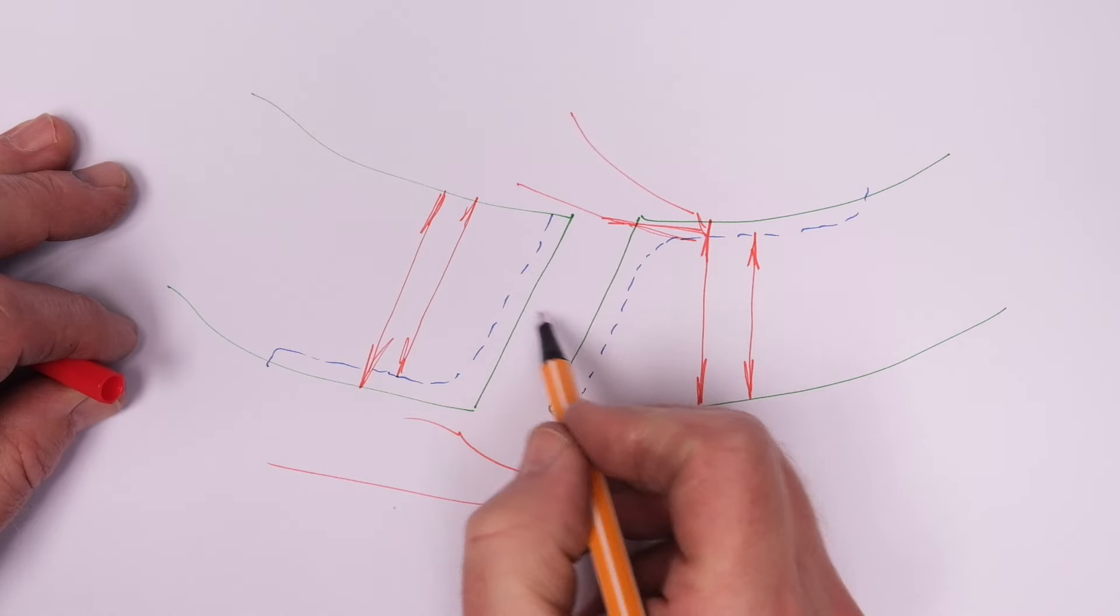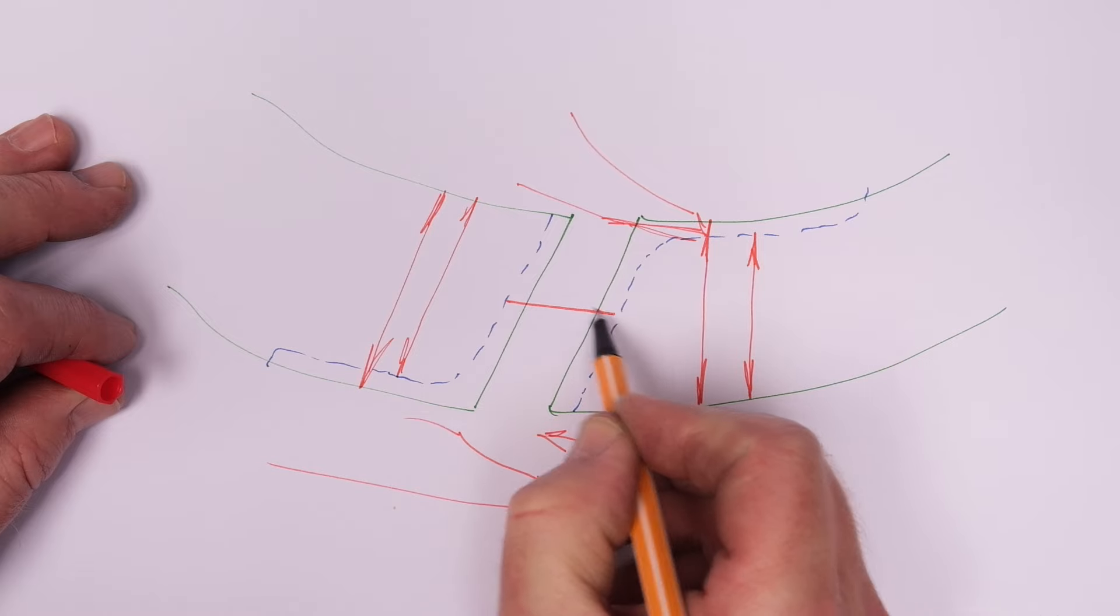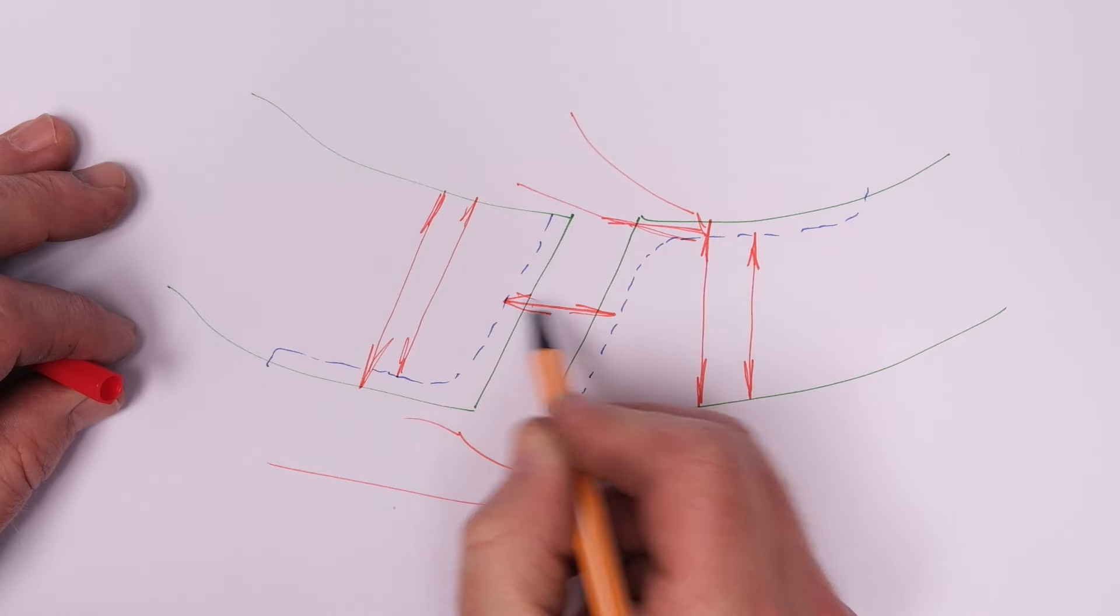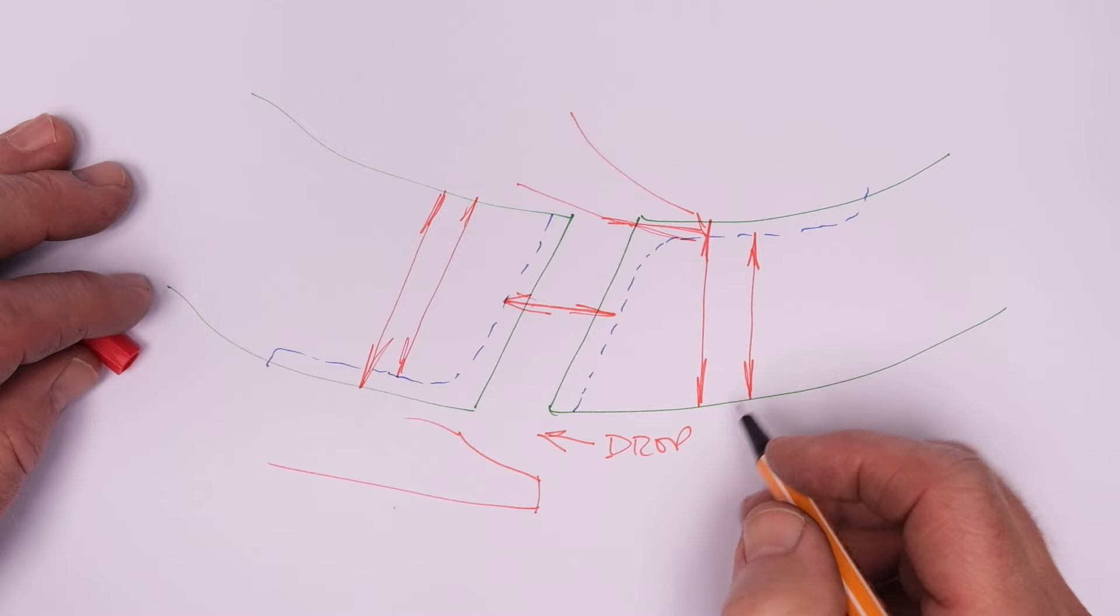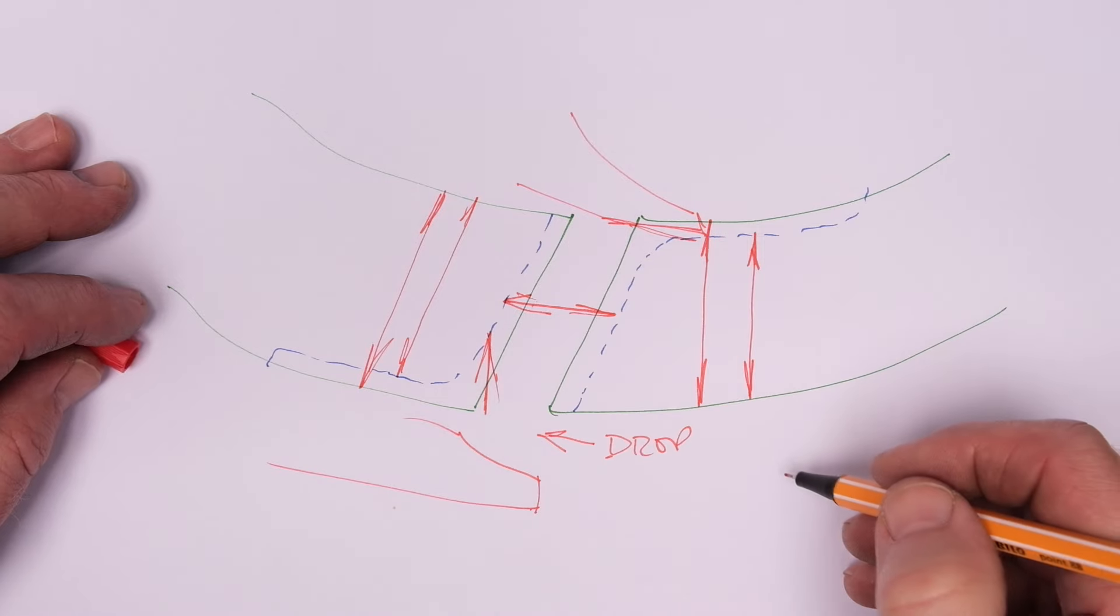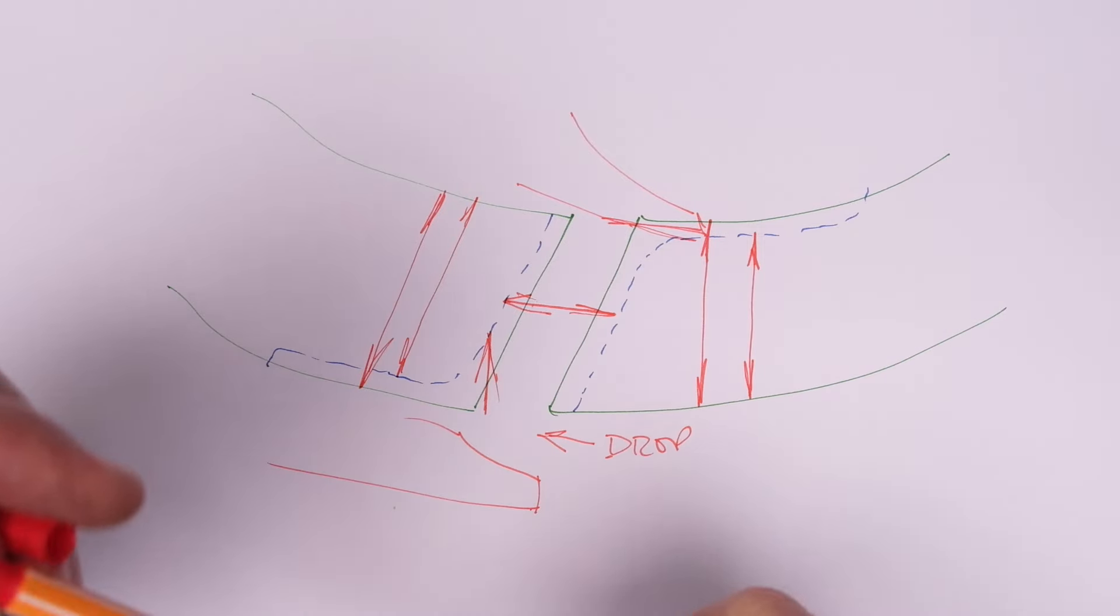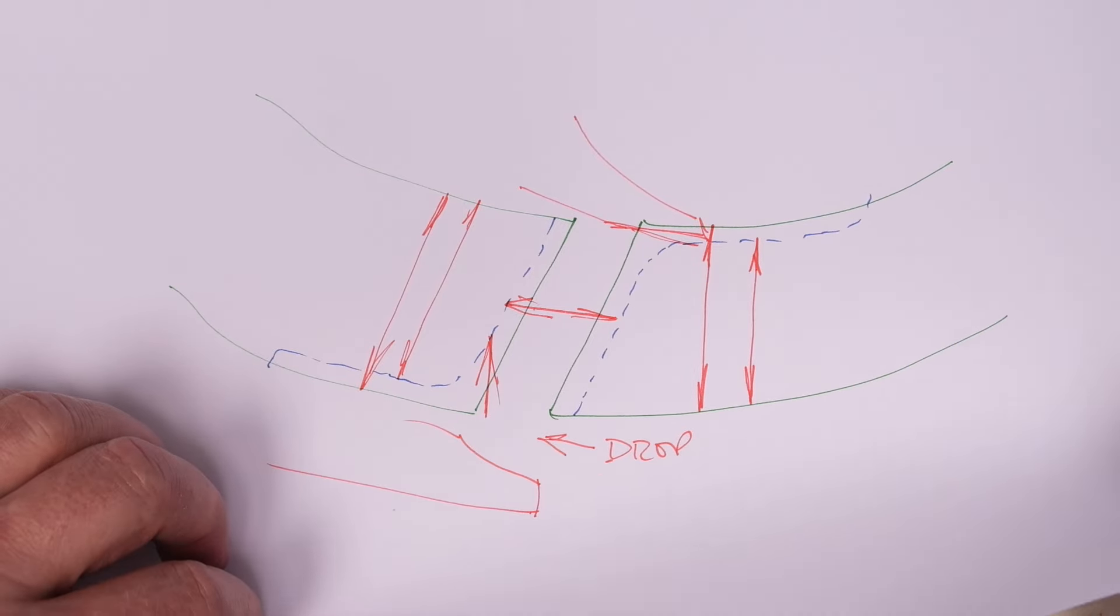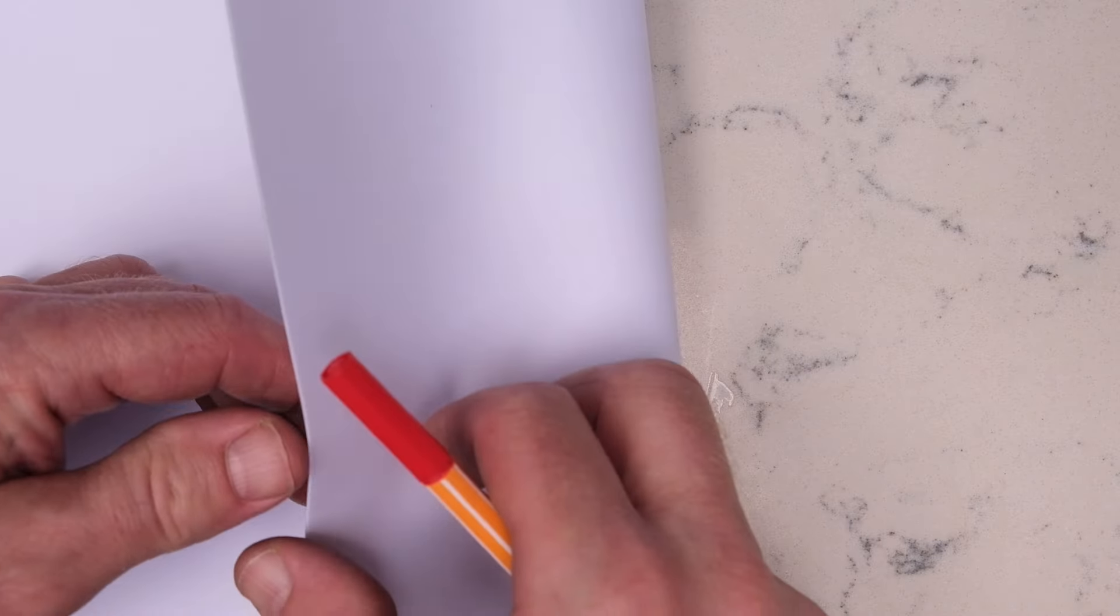And here is just a little illustration of what happens when the pallet wears. As we discussed you get more drop, so there's more free rotation of the escape wheel and therefore the rest of the train, and you get less impulse. Personally until this gets bad I wouldn't worry about it. I certainly tend not to polish out the pallets because you don't really achieve anything.